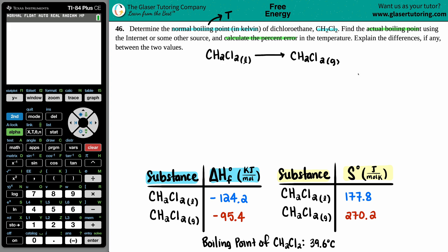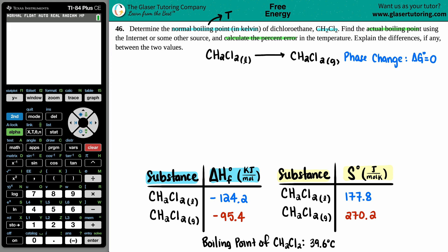The key underlying concept is that for a phase change — the same compound going from liquid to gas — it's a physical change, not a chemical change. That means your ΔG value, your Gibbs free energy, is equal to zero. The general units for ΔG are kilojoules per mole.